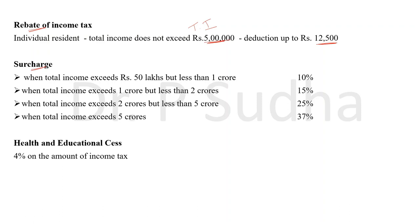Then surcharge. Surcharge will be applicable to individuals whose income exceeds 50 lakhs. The rates are: if the income is 50 lakhs to 1 crore — 10%; 1 crore to 2 crores — 15%; 2 crores to 5 crores — 25%; exceeds 5 crores — 37%. Rebate will be deducted from the tax amount and surcharge will be added. These two things depend upon the question — if the income is less than 5 lakhs we claim rebate; if the income is above 50 lakhs we add surcharge.